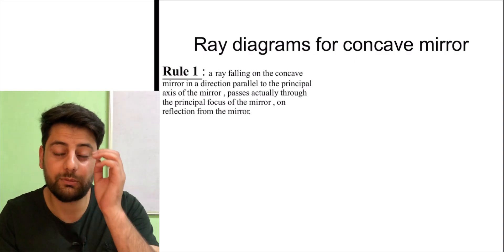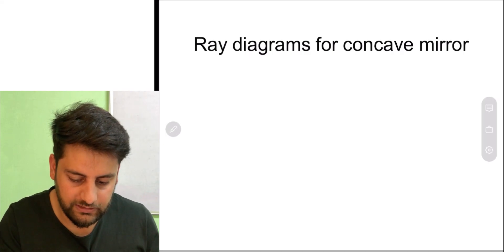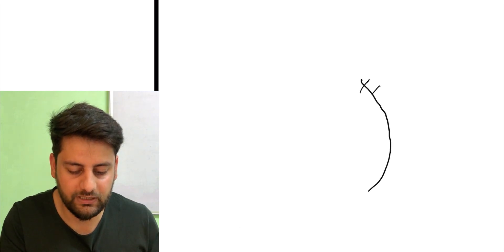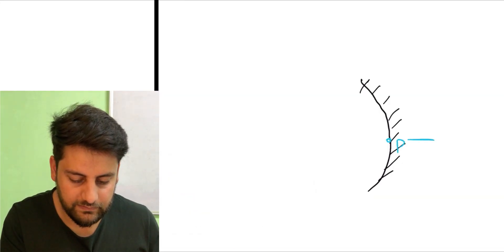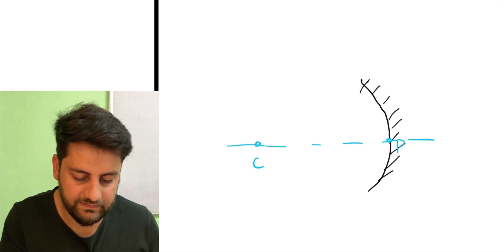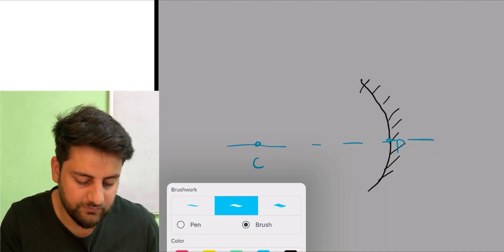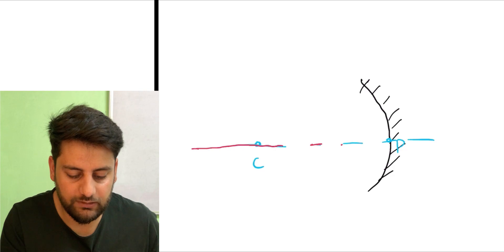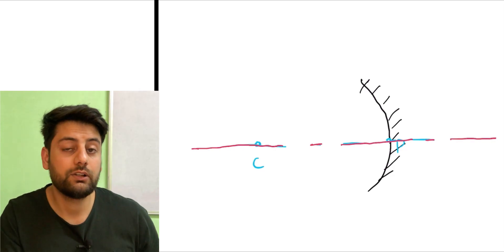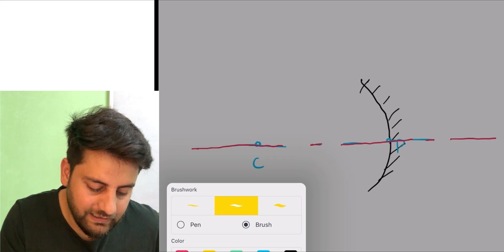Ray diagrams — first we will talk about the concave mirror; it is a very easy thing. We have only four ray diagrams. They are very simple. A ray parallel to the principal axis is the first one. We can have infinite rays coming at different angles, but we don't call them standard. It would take a lot of time to calculate the angle of incidence and angle of reflection for each one.